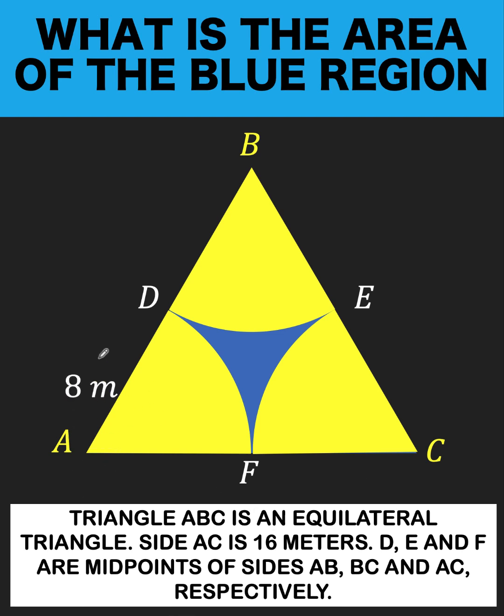it follows that AD is 8 meters. All the sides are 8 meters. So AB is given to be 16, and AD and BD are both 8 meters. The same explanation for this side of the triangle and this side of the triangle.